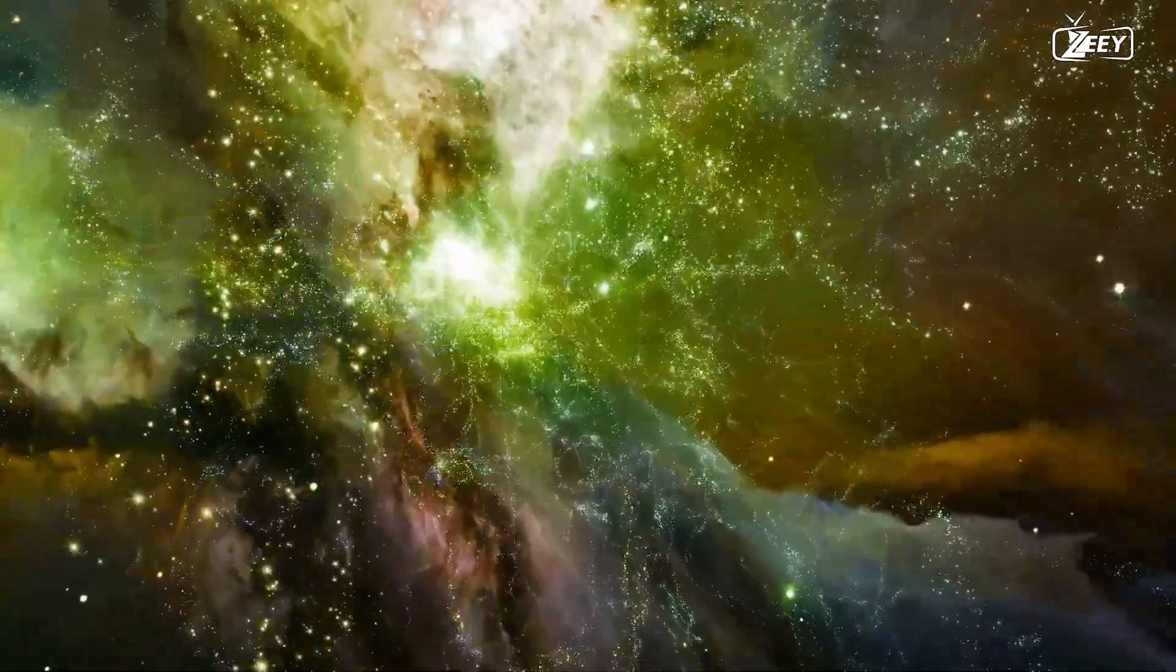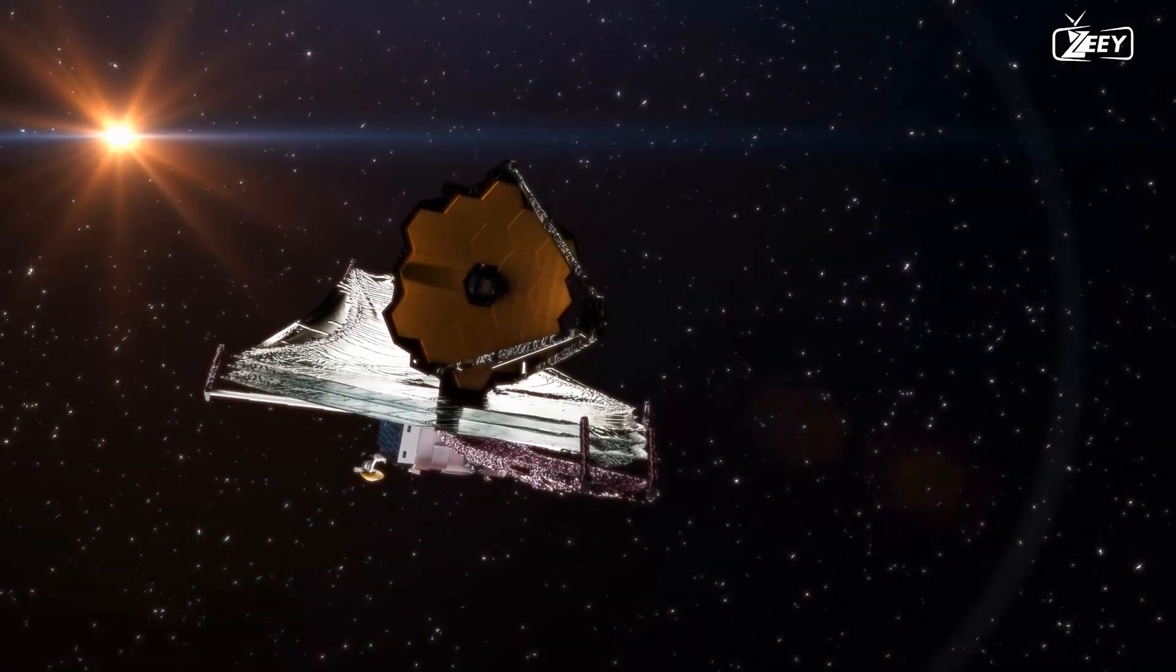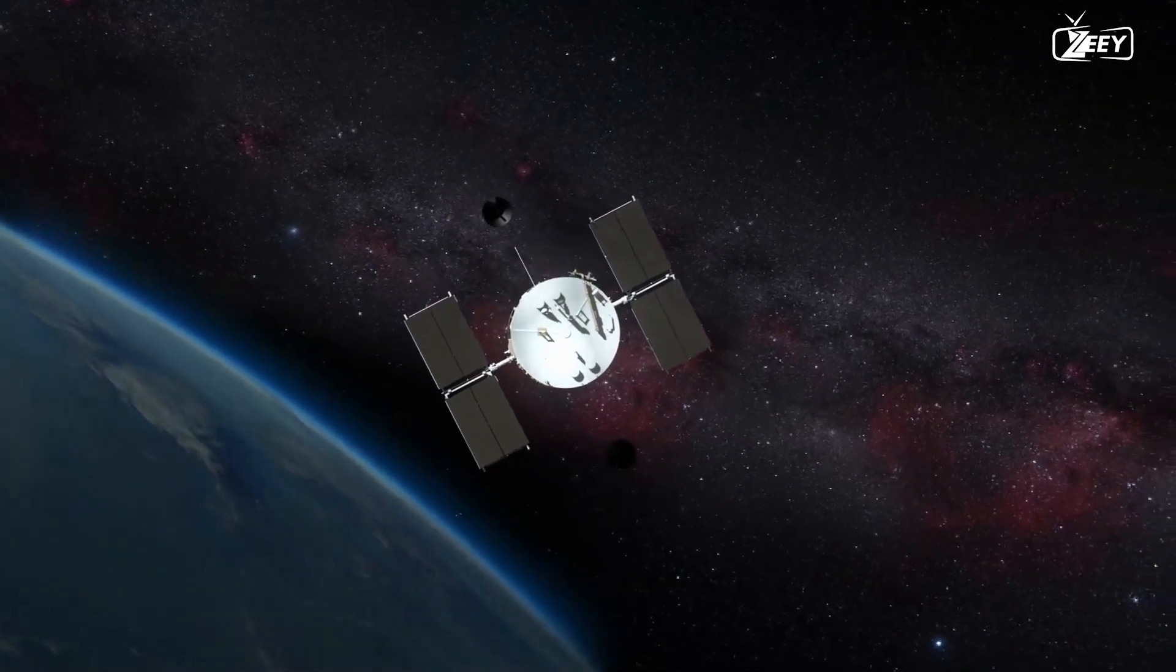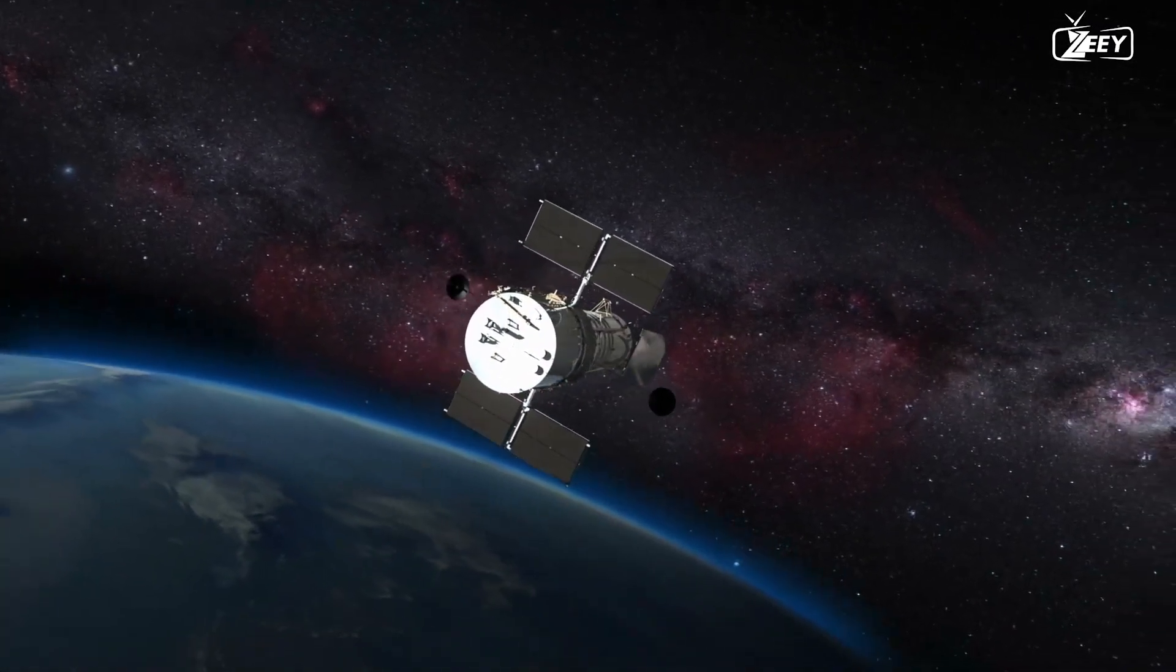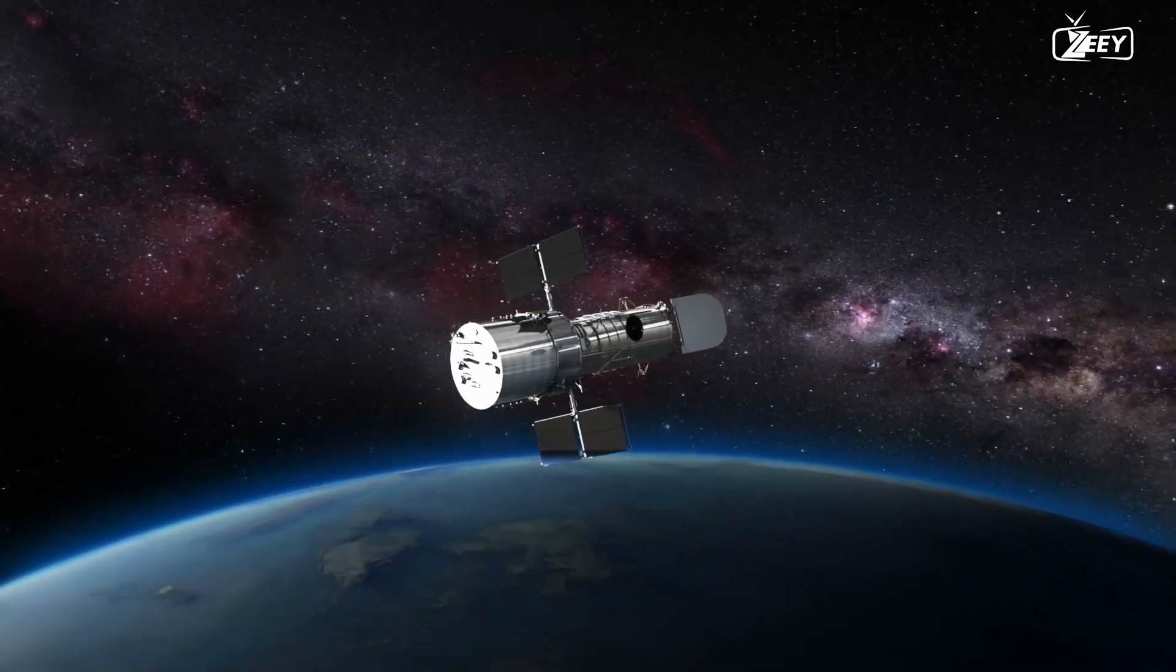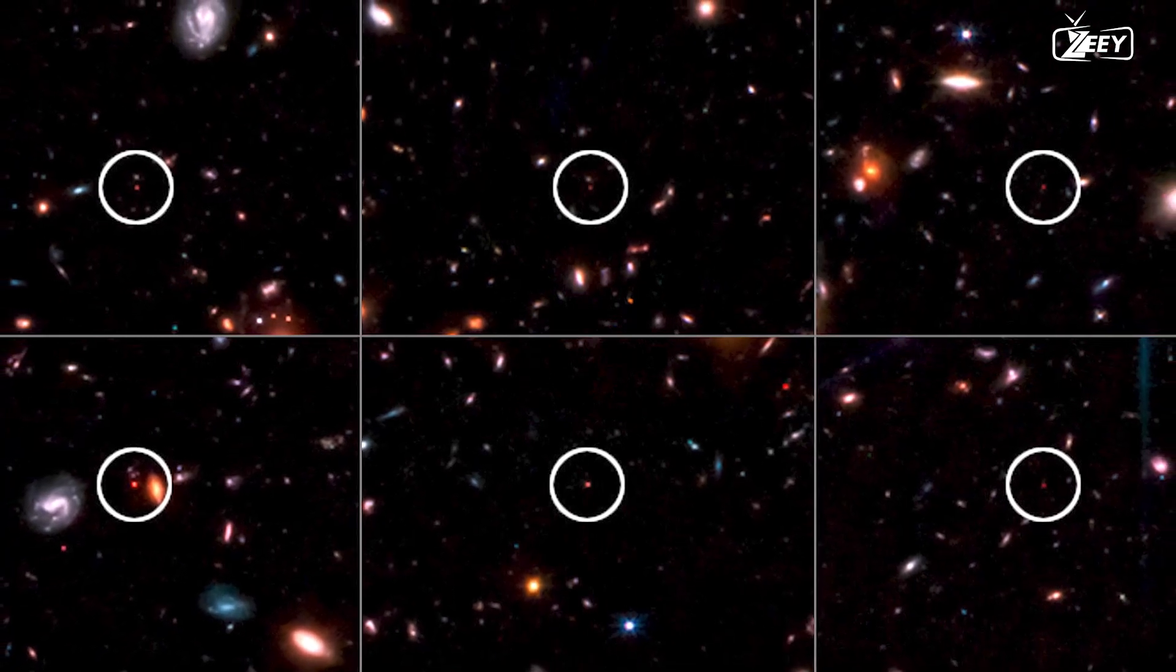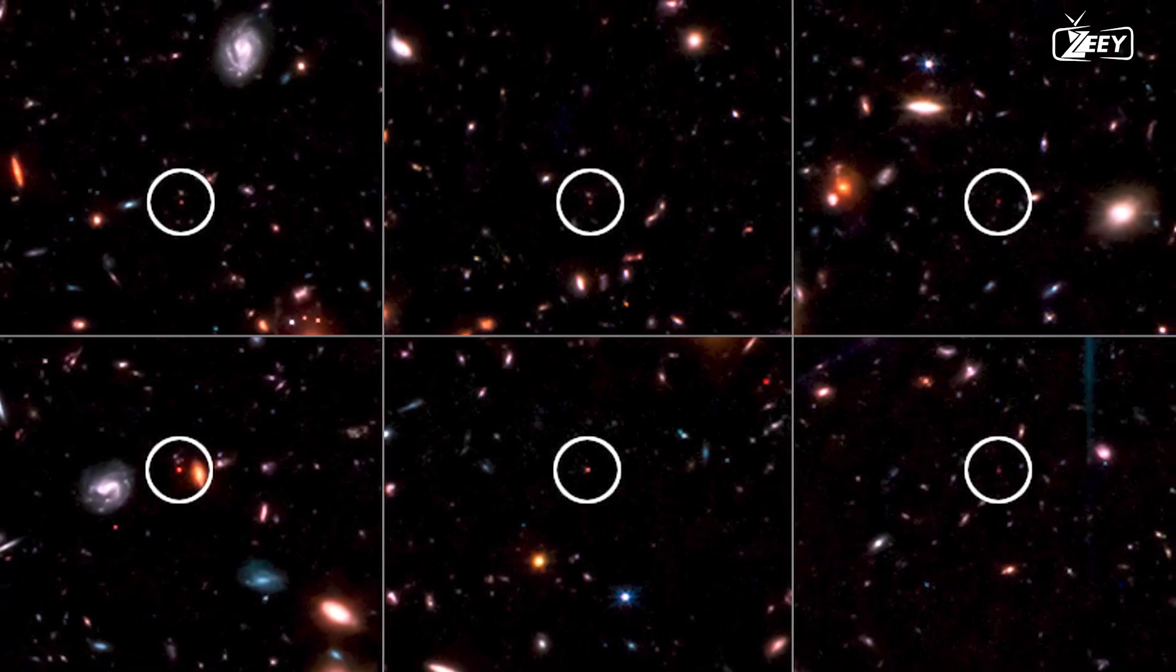Last summer, the Webb telescope observed a portion of the sky near the Big Dipper that had previously been photographed by the Hubble Space Telescope. Webb, on the other hand, sees mostly in the infrared spectrum, whereas Hubble sees primarily in the visible spectrum, providing it with a novel viewpoint on a region of space where Hubble had previously found nothing particularly notable. The findings of the new study were intriguing: six blotches of incredibly intense red yet fuzzy light stood out from the otherwise unremarkable background photograph.